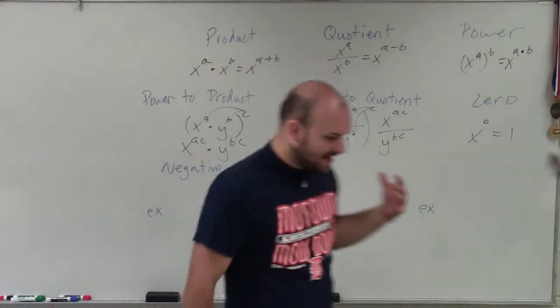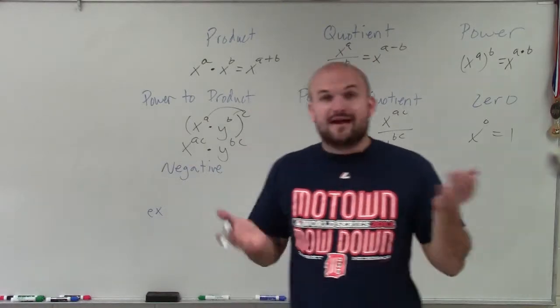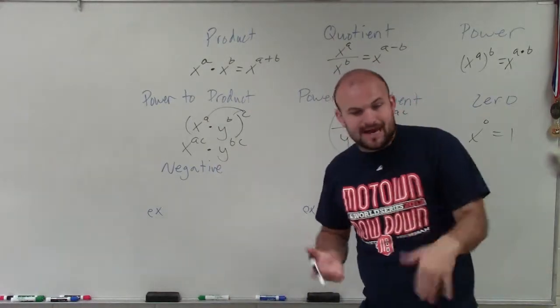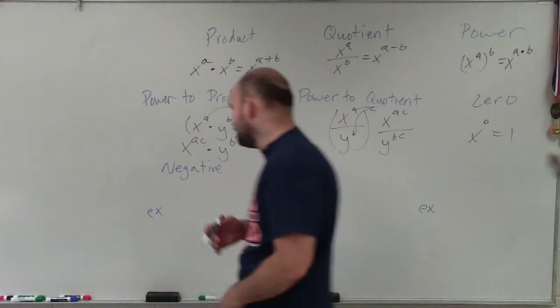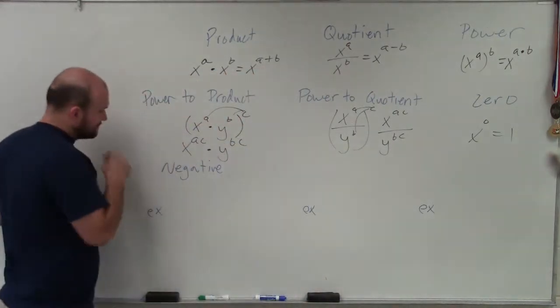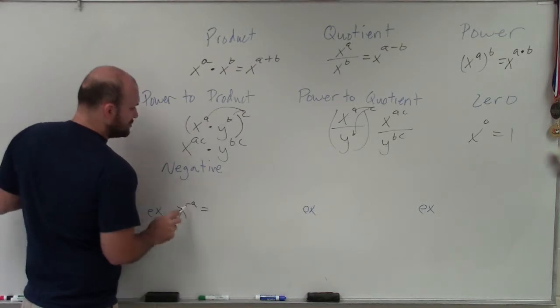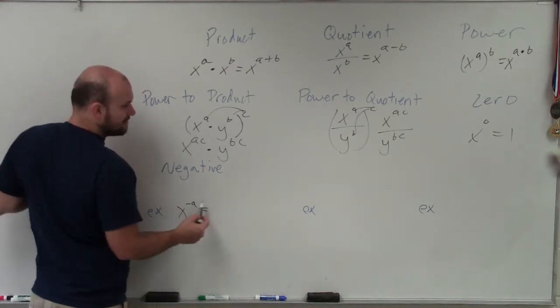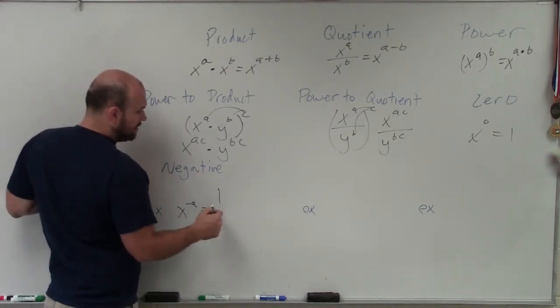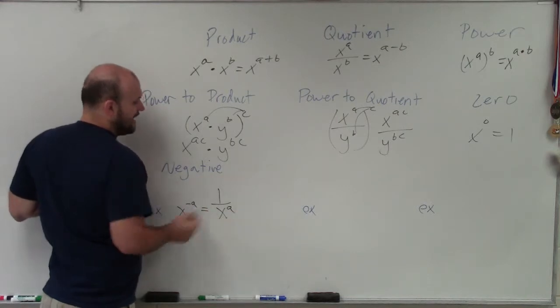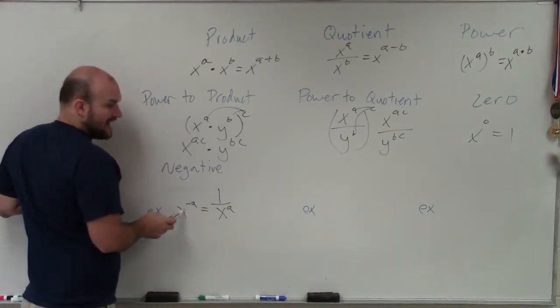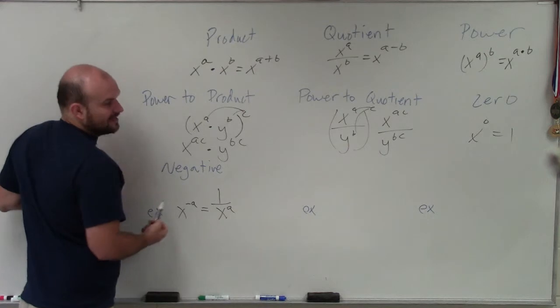And negative exponents. These happen a lot where we have exponents that are negative in the numerator, denominator, or fractions. So if I have x to the negative a, then to rewrite this as a positive, I'm going to rewrite it as the reciprocal. The reciprocal of x would be 1 over x to the positive a.